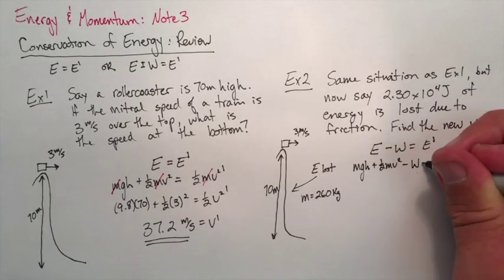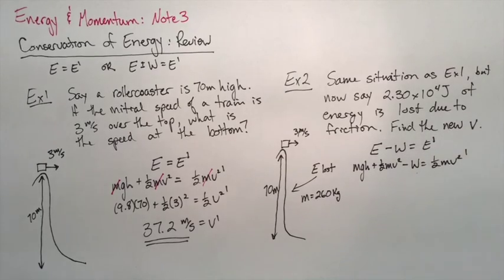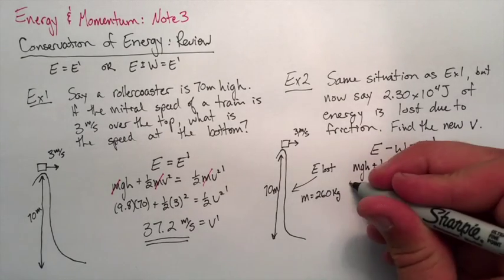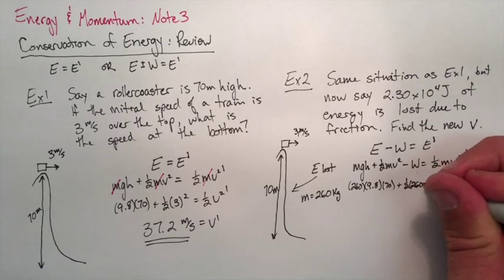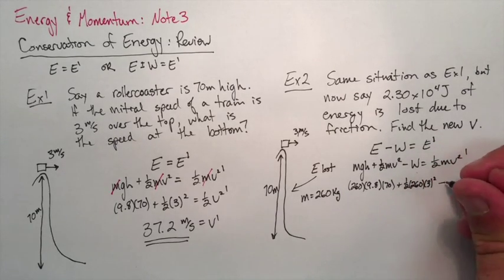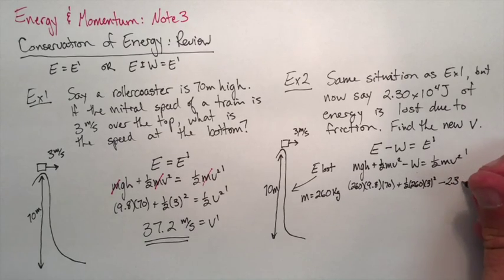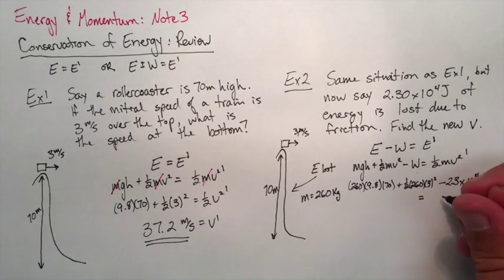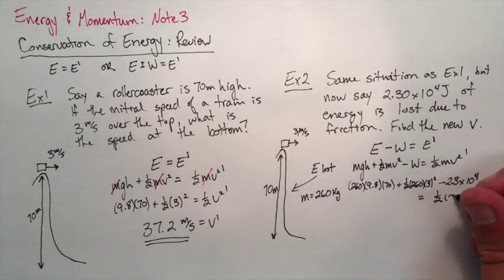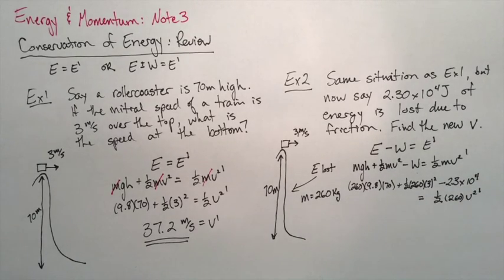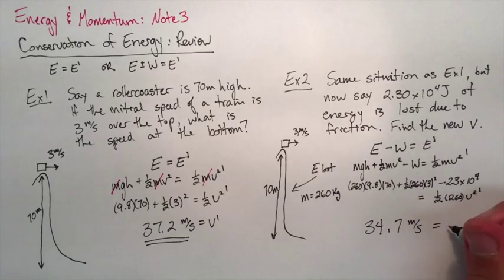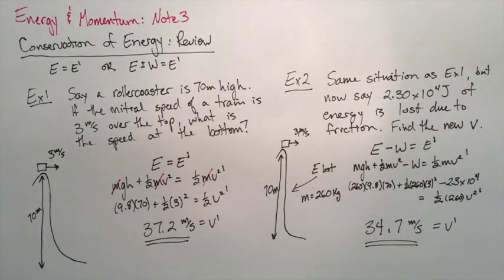So again, gravitational potential and kinetic at the top. And we're only going to have kinetic at the bottom. Putting in our numbers, a mass of 260. We also subtract the work done. And finally here we can solve for our V prime. When you punch that into your calculator we get a value of 34.7 meters per second which is less than that first example.